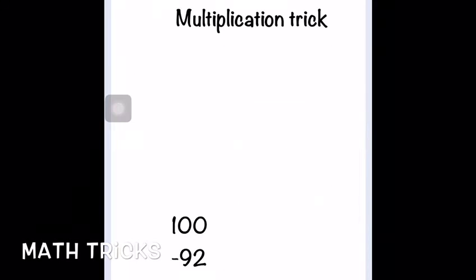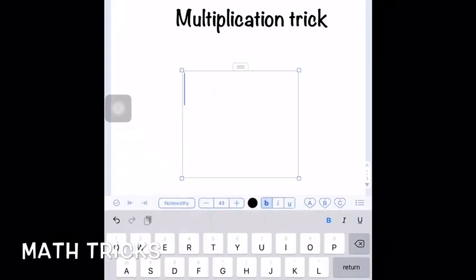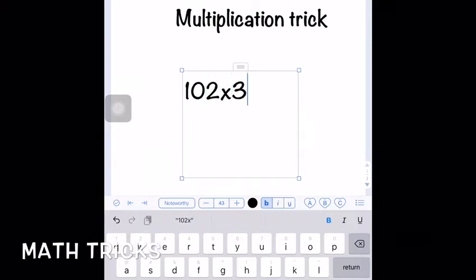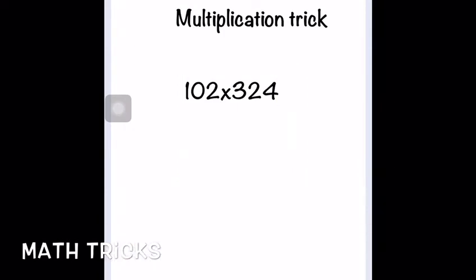For numbers above 100, we're going to take 102 multiplied by 324 — the same 324. You can use any number; I'm just showing you by example. This trick works with any number, even in thousands, millions, billions, or trillions.